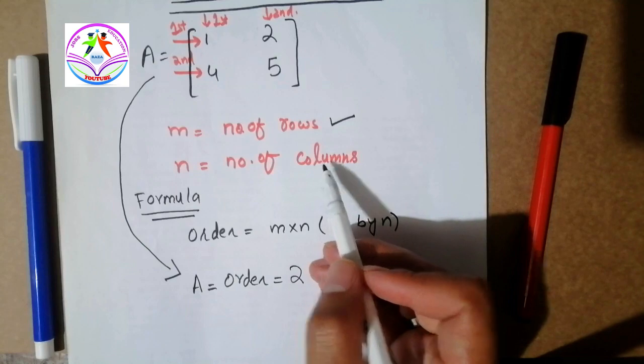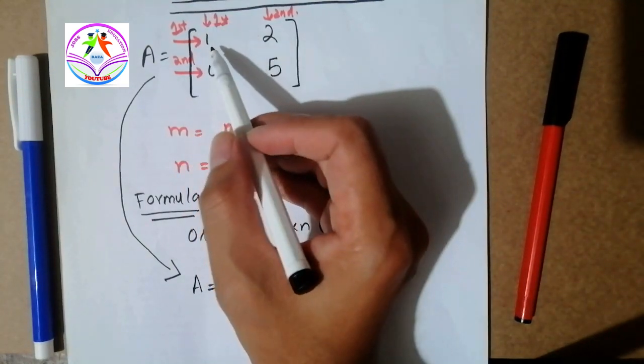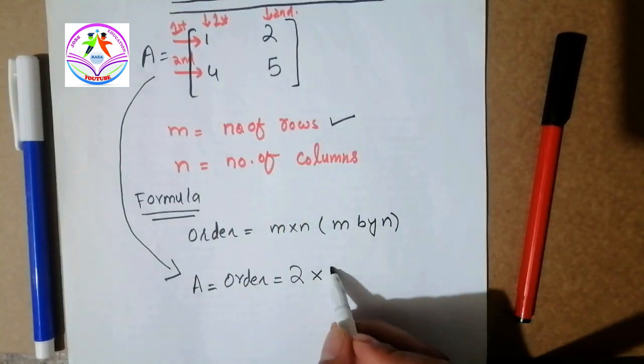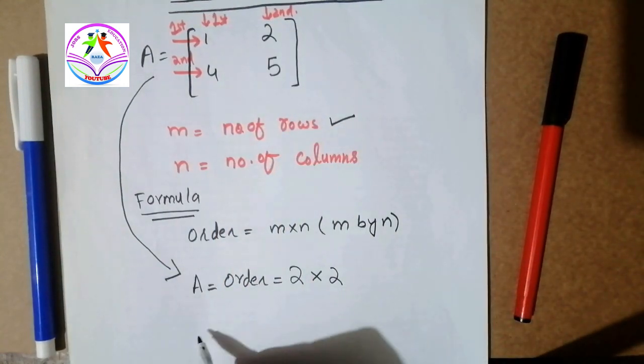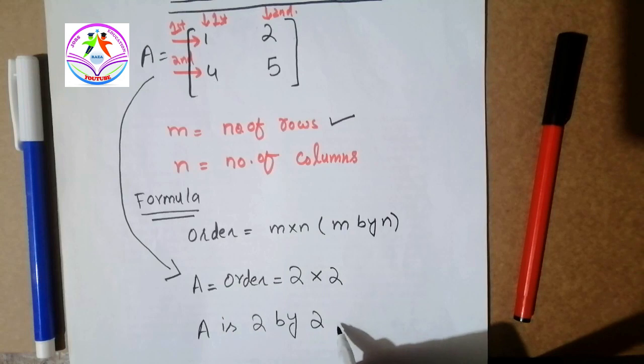And n is a number of columns. We can check that how much column in there, first column and second column, so we can write that two. We can say that A is 2 by 2 matrix.